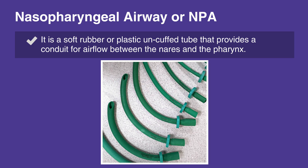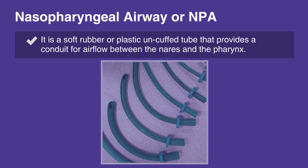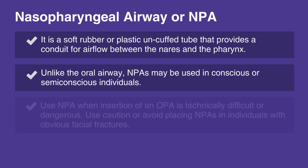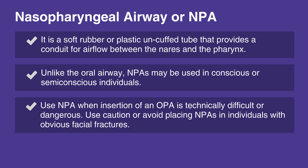The NPA is used as an alternative to an OPA in individuals who need a basic airway adjunct. Unlike the oral airway, NPAs may be used in conscious or semi-conscious individuals with intact cough and gag reflex. Use NPA when insertion of an OPA is technically difficult or dangerous. Use caution or avoid placing NPAs in individuals with obvious facial fractures.